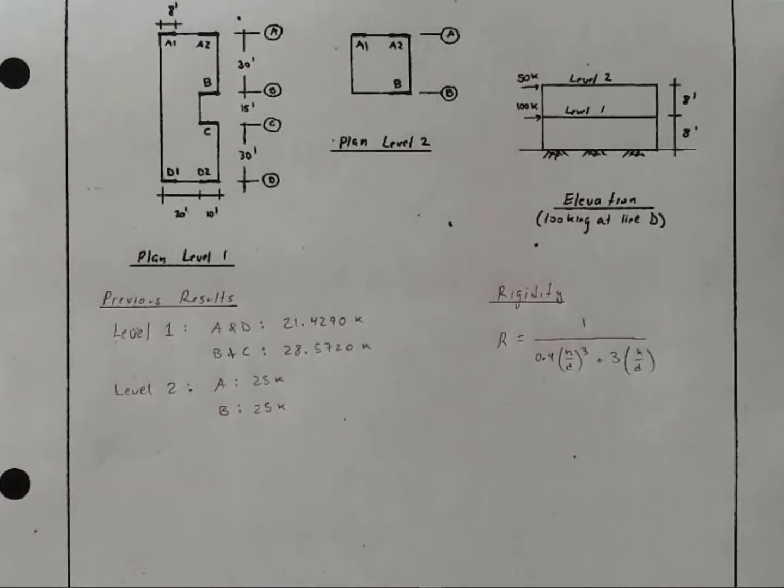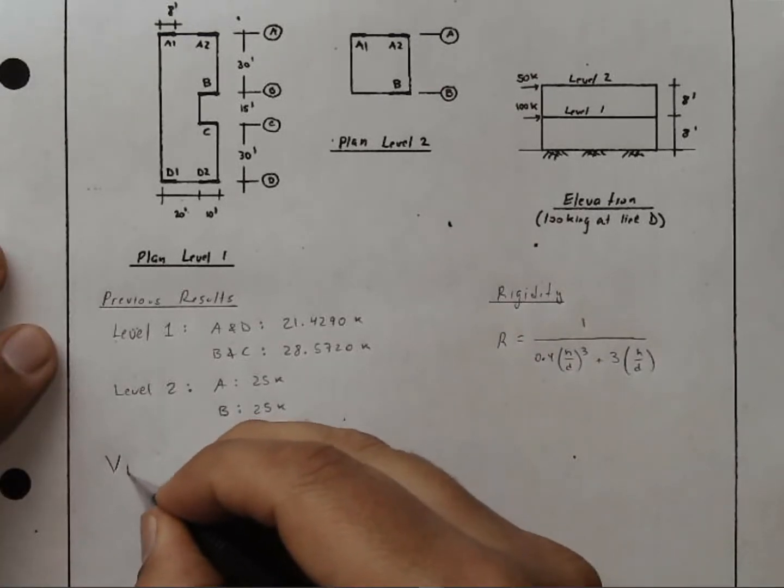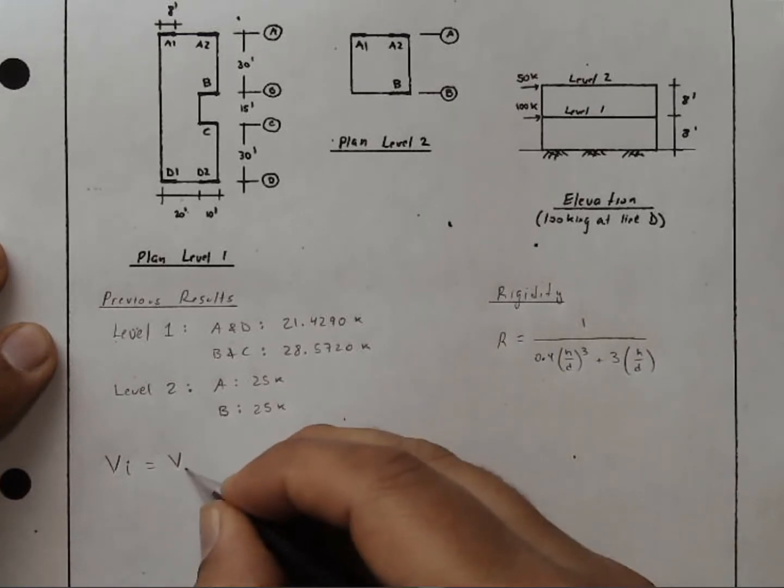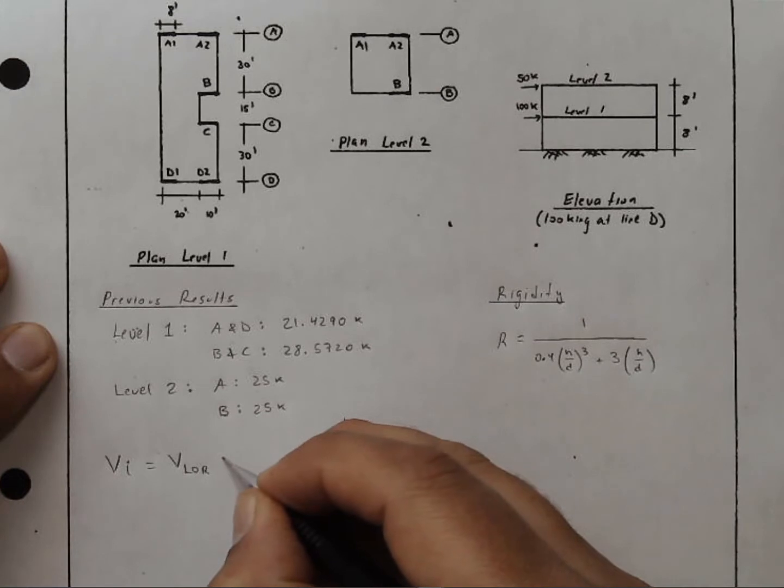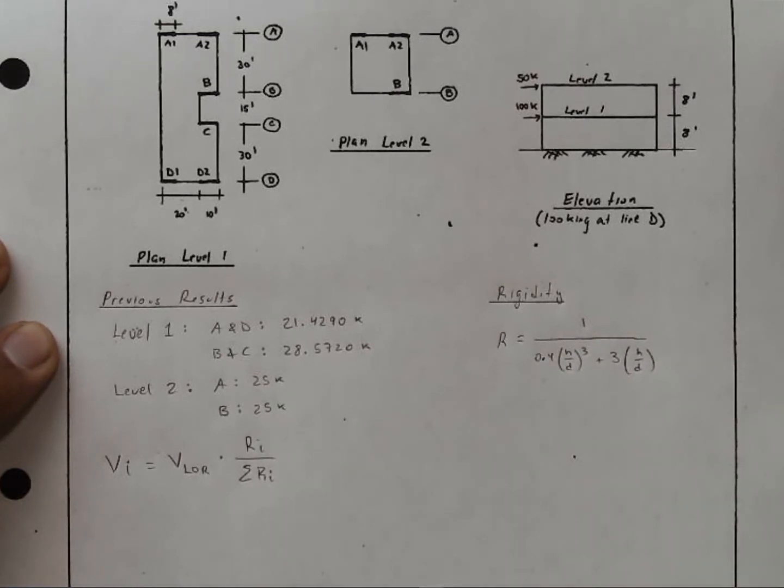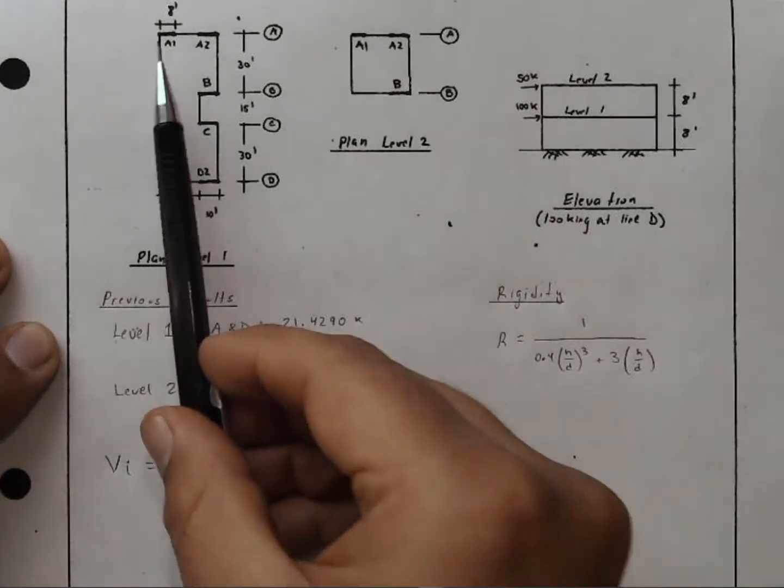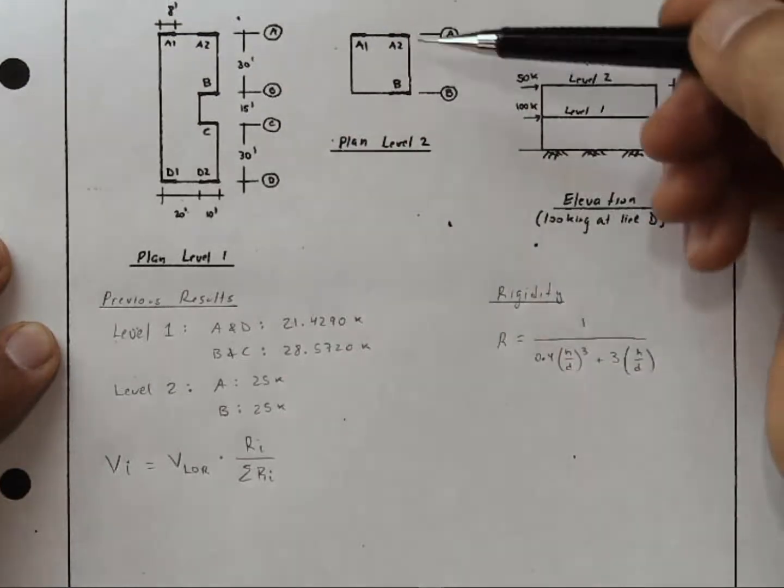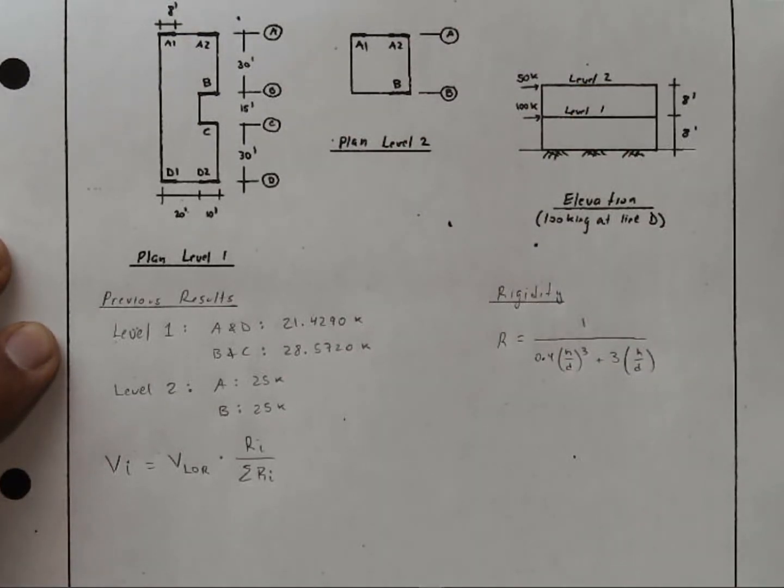We're going to allocate these forces proportionally to their stiffnesses or to their rigidity. So the shear in any given element is the shear along the line of resistance times the rigidity of that element divided by the sum of the rigidities along that line of resistance. So in this case, we need to look at the rigidities of A1 and A2. And the calculation will be similar for A, for D, and for A on the upper story because the dimensions are all the same.